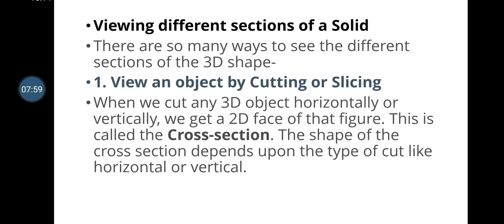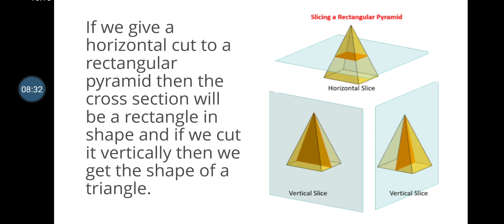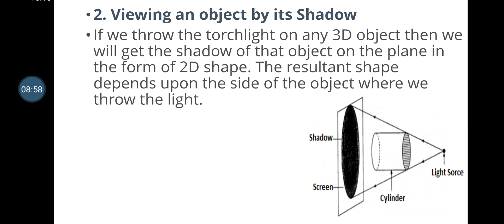Viewing different sections of a solid by cutting or slicing: when we cut any 3D shape horizontally or vertically, we get a 2D face called the cross section. The shape of the cross section depends on the type of cut. For example, a horizontal cut to a rectangular pyramid gives a rectangular cross section, while a vertical cut gives a triangular cross section.